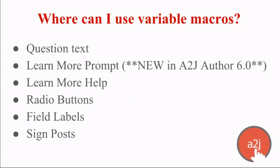You can use a variable macro in the question text. You can use it in the learn more prompt, which is new in A to J 6. In A to J 4, it used to throw up an error and would show the code rather than the value, so this is a new feature in version 6. The prompt is the little thought bubble that the end user sees, with a learn more button underneath it. The learn more help is the answer that the guide avatar gives to the end user based on that prompt. You can also use a macro in radio buttons, field labels, and signposts.